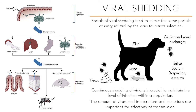Shedding refers to when the host secretes or excretes the new virions so the virus can continually infect other hosts. The portals of exit typically mirror the portals of entry. For example, a dog infected with an enteric virus through contaminated food will shed virus in feces and urine; viruses can also shed through saliva, sputum, respiratory droplets, ocular and nasal discharges; and papillomaviruses, herpesviruses, and polyomaviruses can shed through the skin. The amount of virus shed matters — rotavirus requires as few as one virion to cause infection.